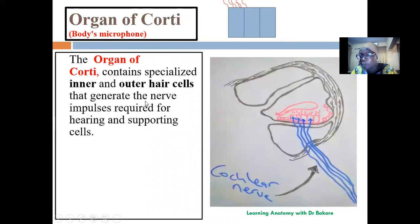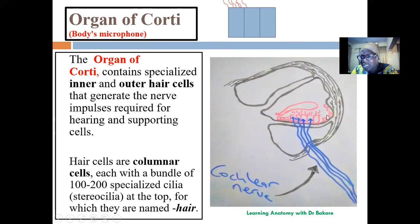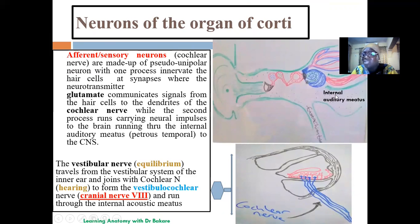The organ of Corti is made up of basically columnar-type cells. On their free surface they have specialized cilia referred to as stereocilia. There are also other types of cells in the organ of Corti, but these are supporting cells. These hair cells are the specific cells responsible for generating the neural impulses.